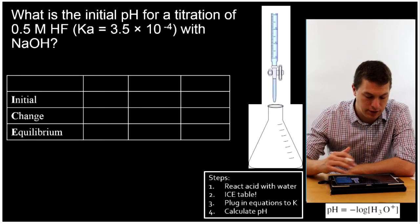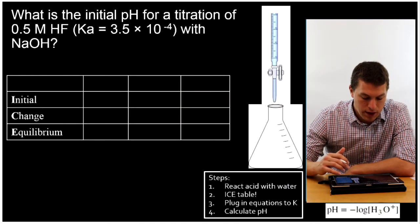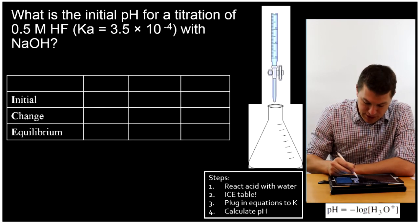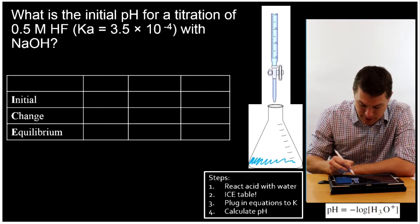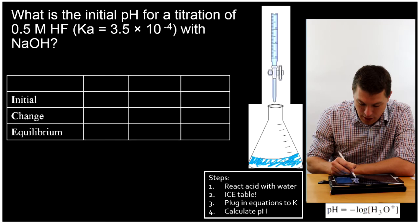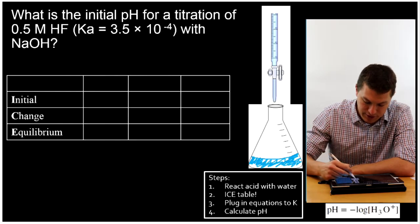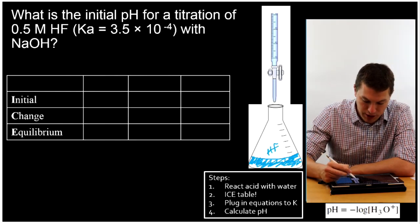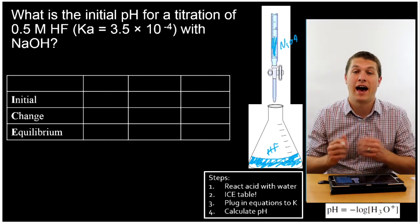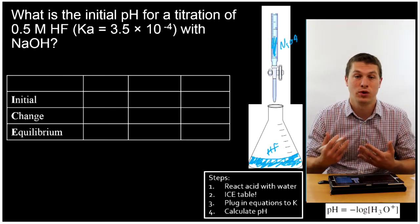So for this particular titration, we know that we have 0.5 molar HF. And it doesn't even tell us the volume, but actually that doesn't matter, because all the pH depends on is the concentration of our H+. So we have HF down here, and we're going to eventually add some sodium hydroxide from up here. But we haven't done that yet. So this is the initial setup where we just have acid down in our flask, and all we want to know is what's the pH of the acid.